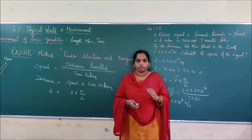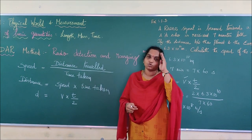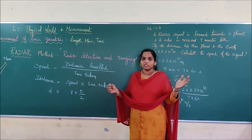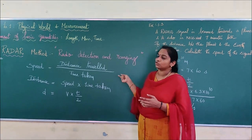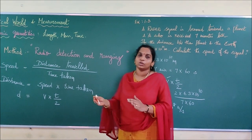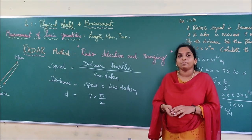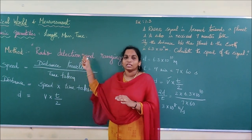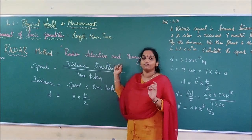In the measurement of length, we have both direct and indirect methods. In the direct method, we use a screw gauge and vernier caliper to measure small distances. In the indirect method, we have the triangular method, the parallax method, and the radar method. These are all very important tools for different scales of measurement. Next, we will go to the measurement of mass and time.